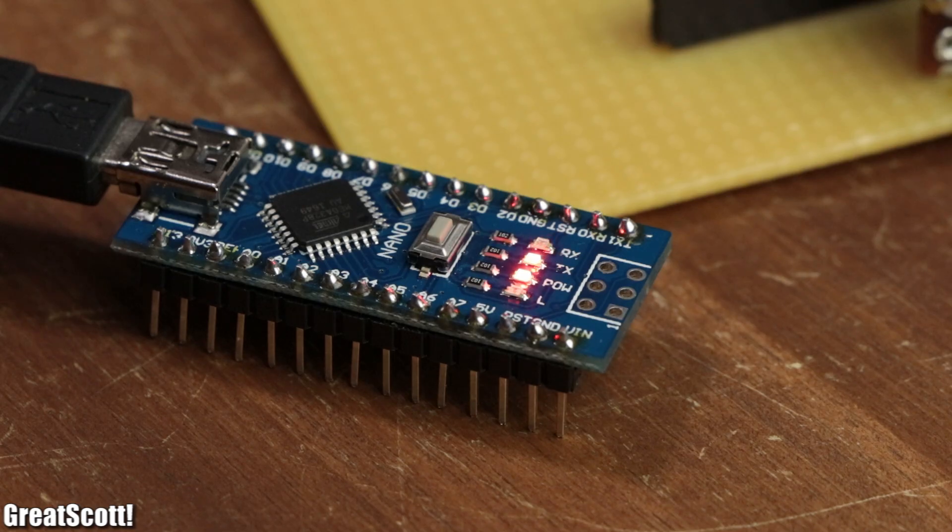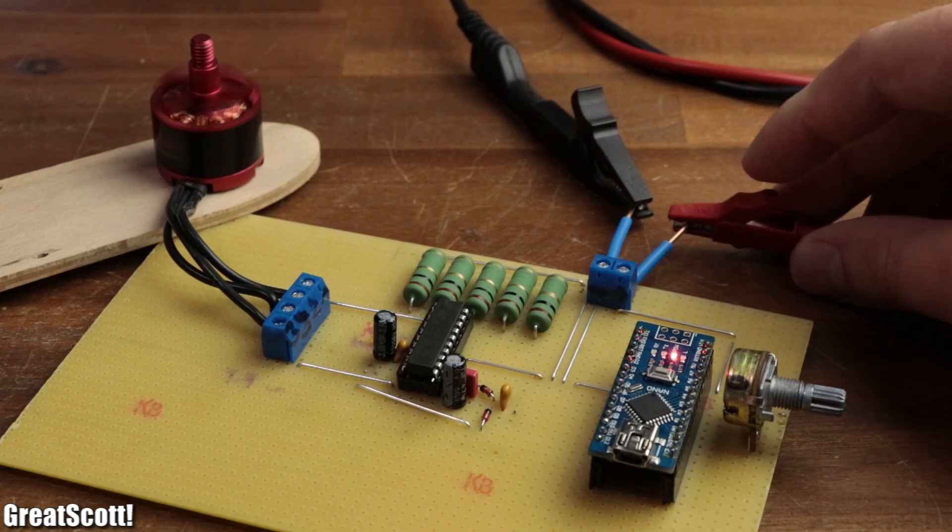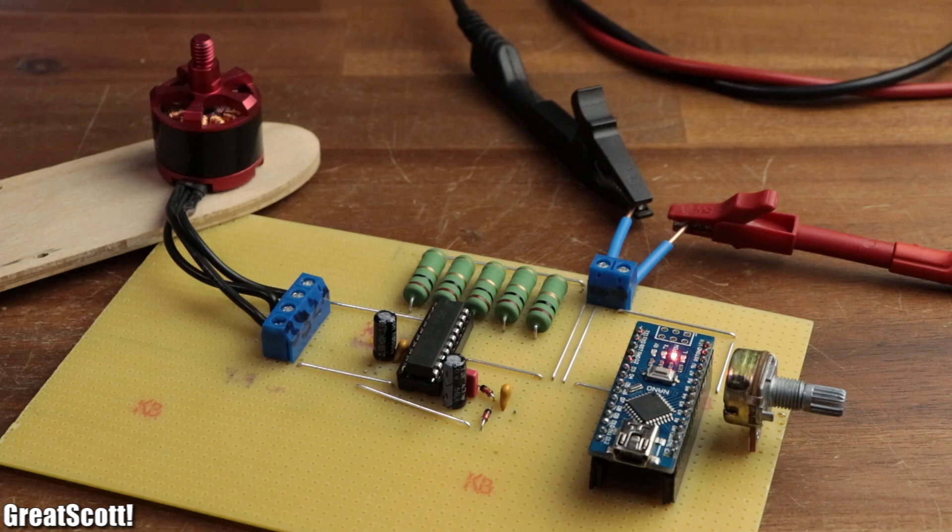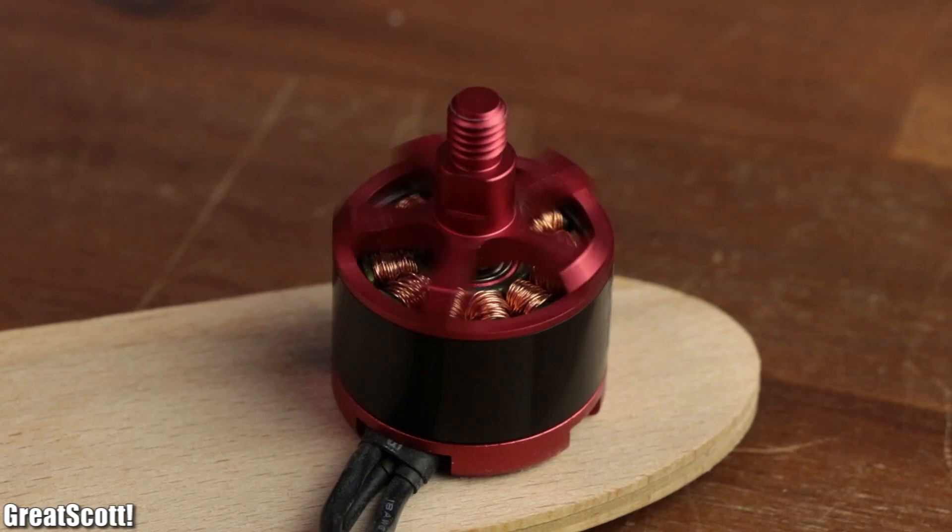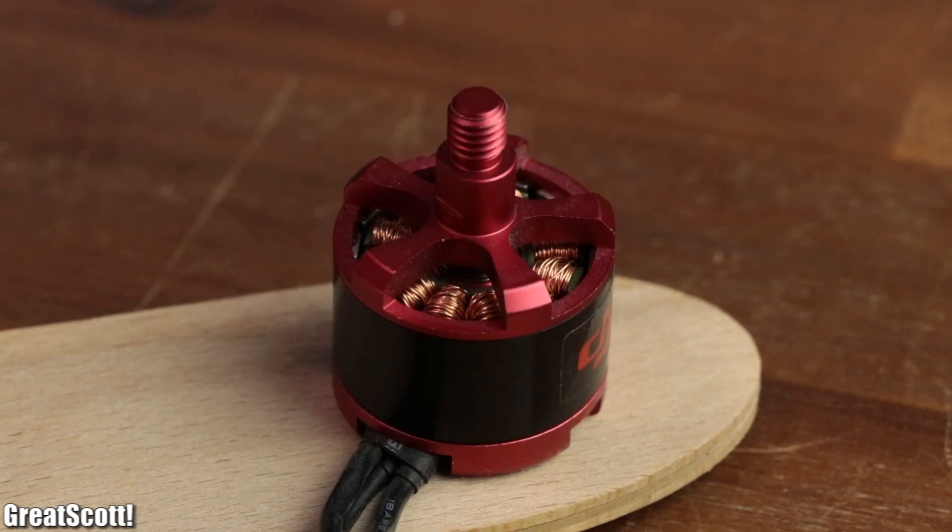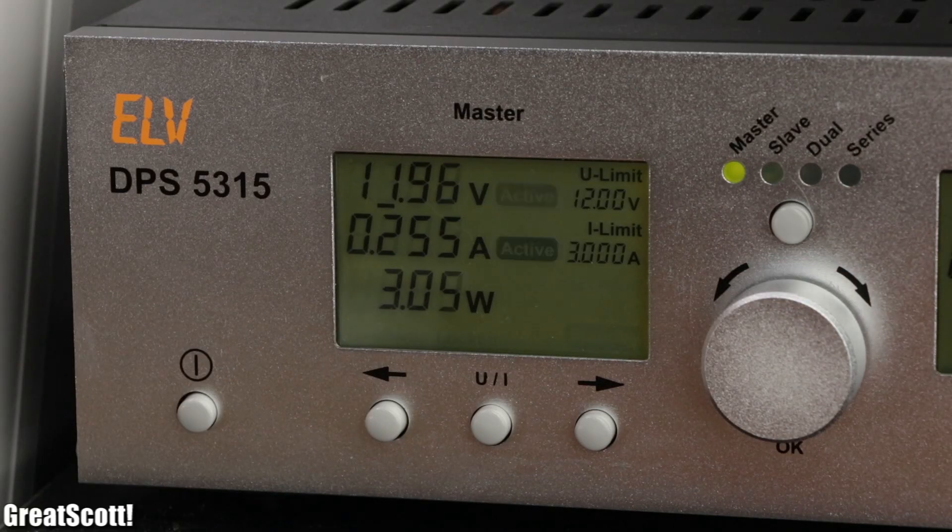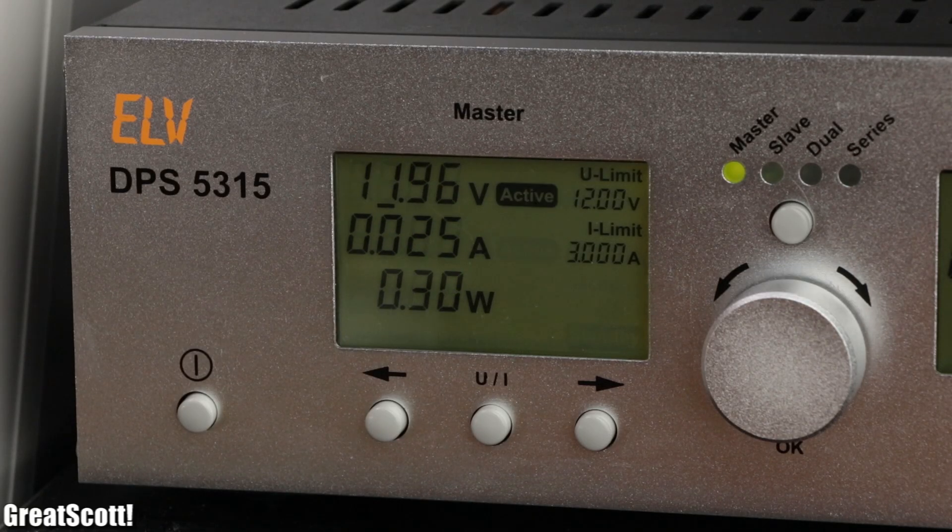After uploading the new code and supplying power, we can see that the rotor does in fact move, but not in a way that would be useful for anything. And if we take a peek at the power supply, we can once again see that the current limit still gets reached quite frequently.